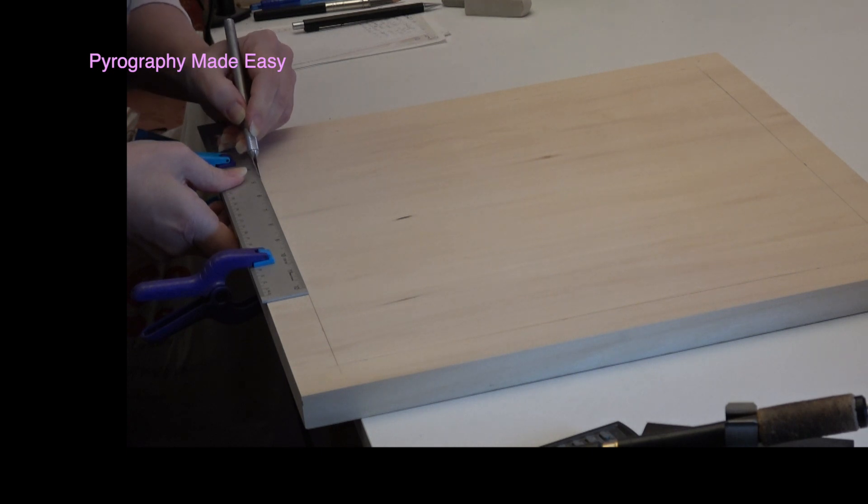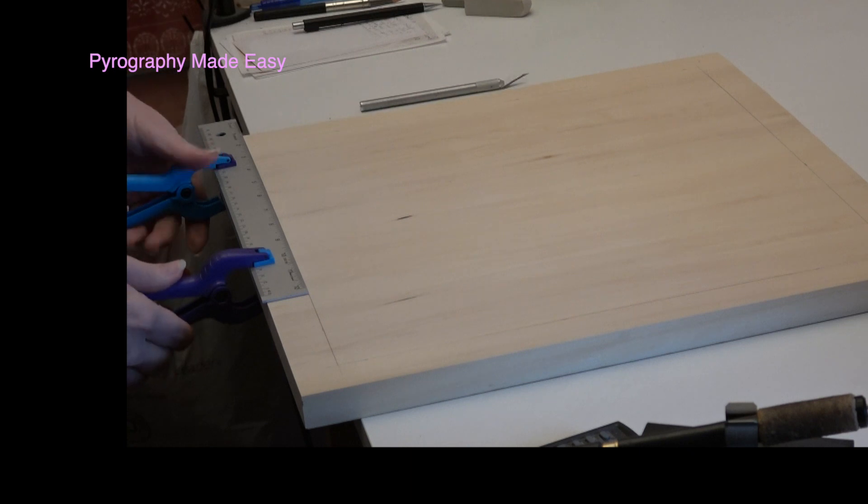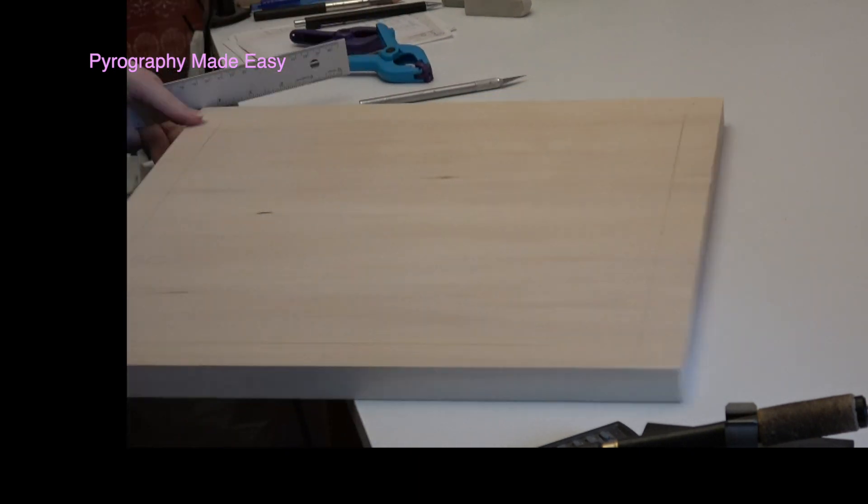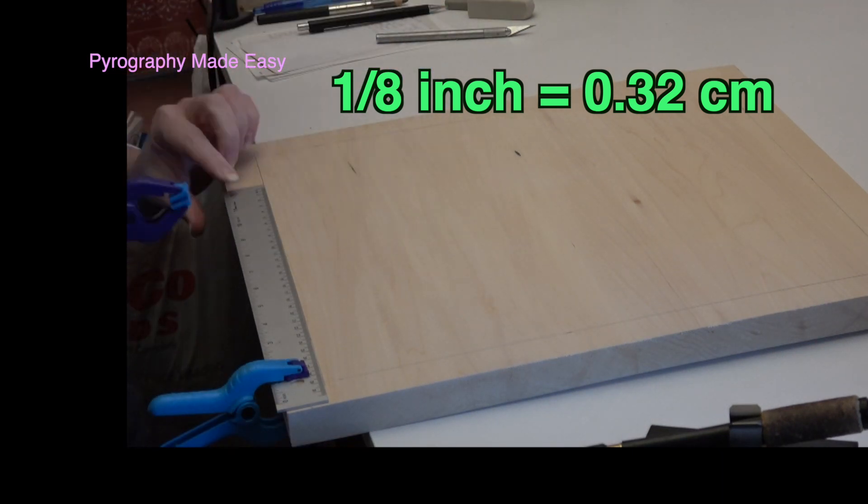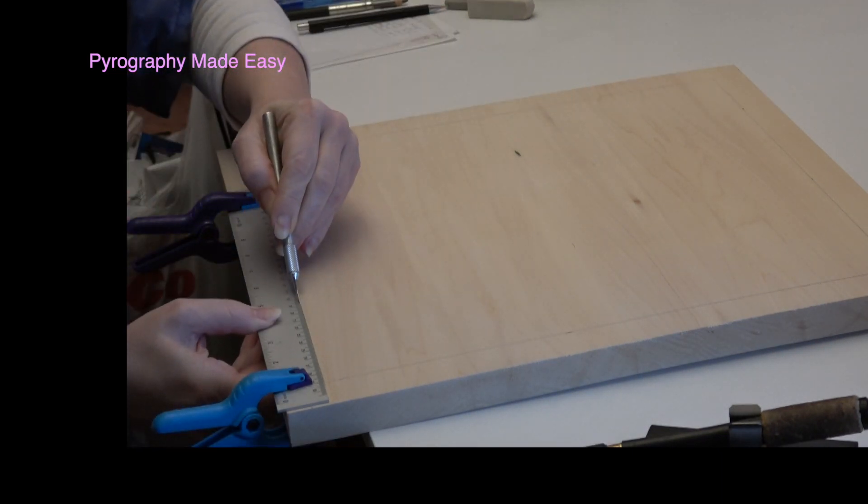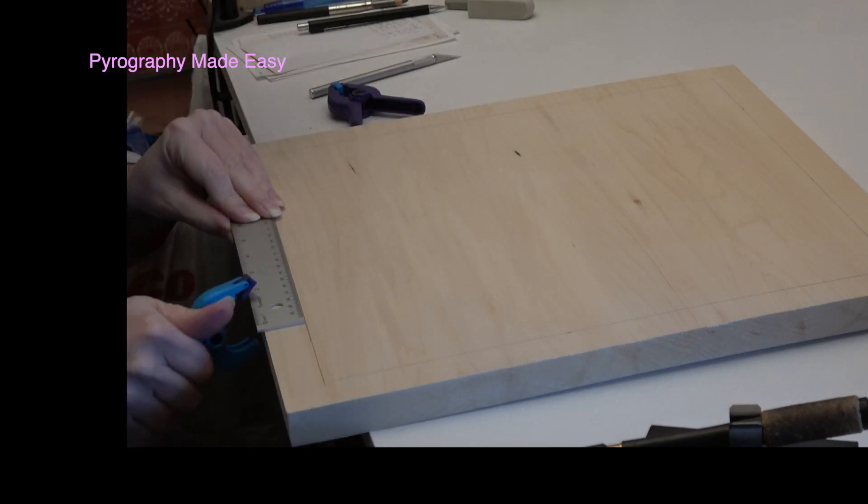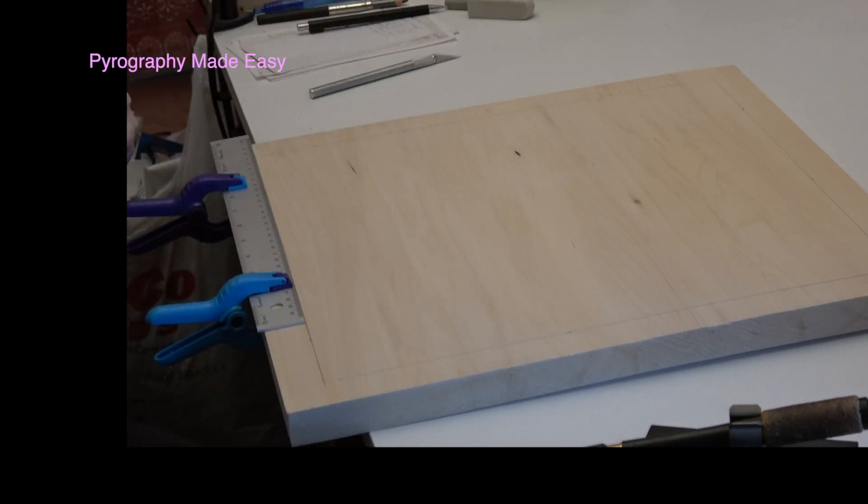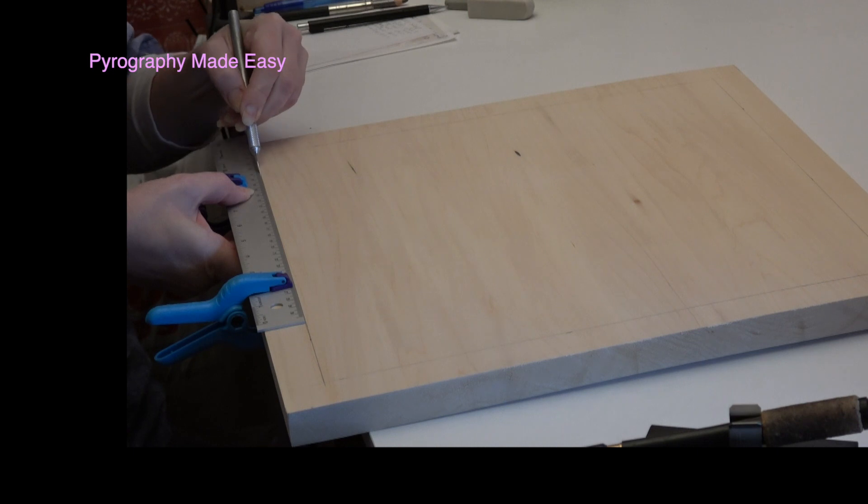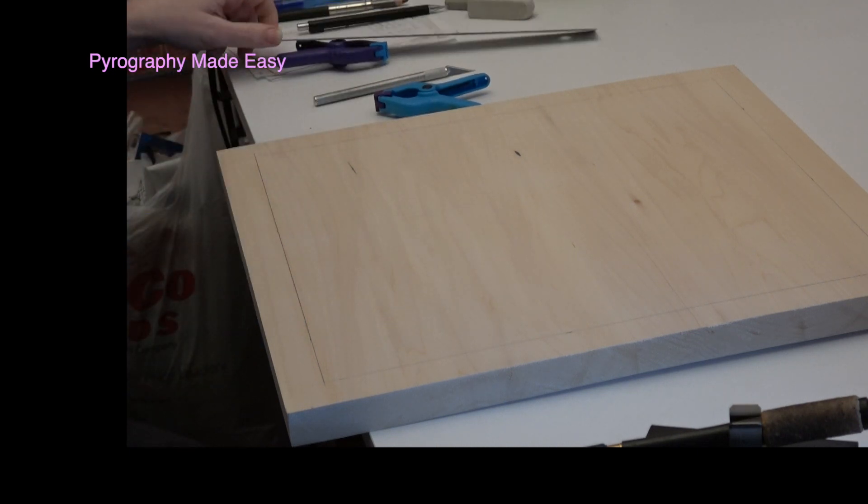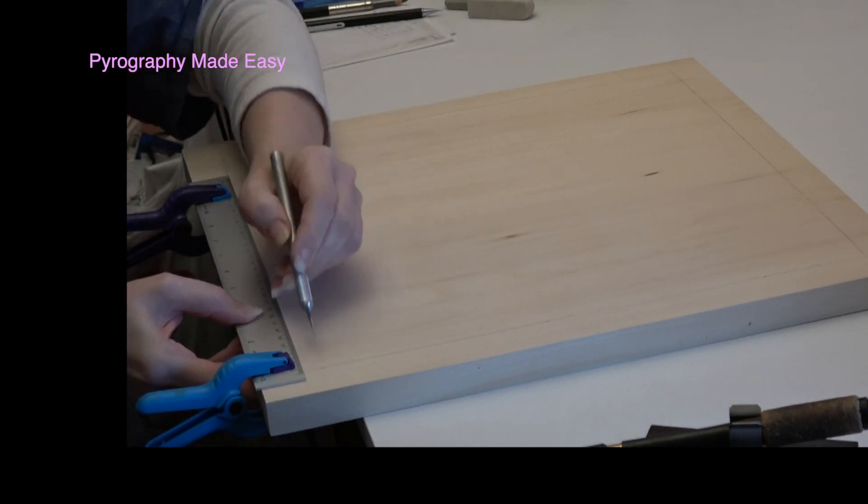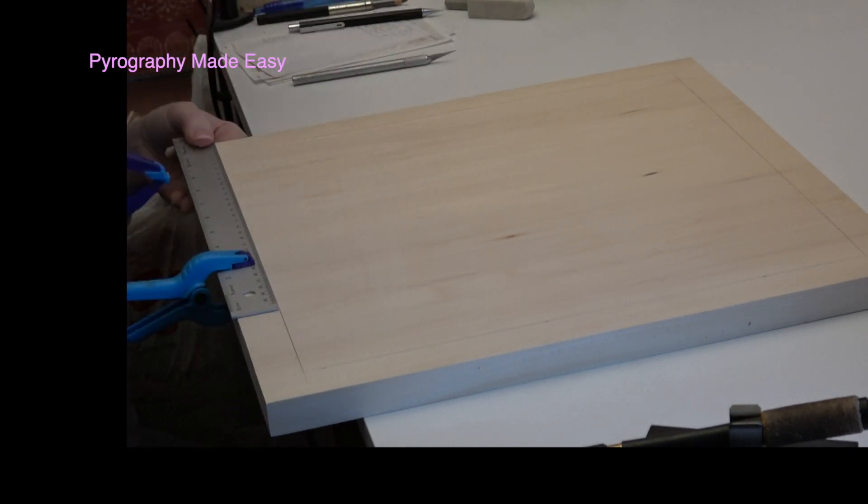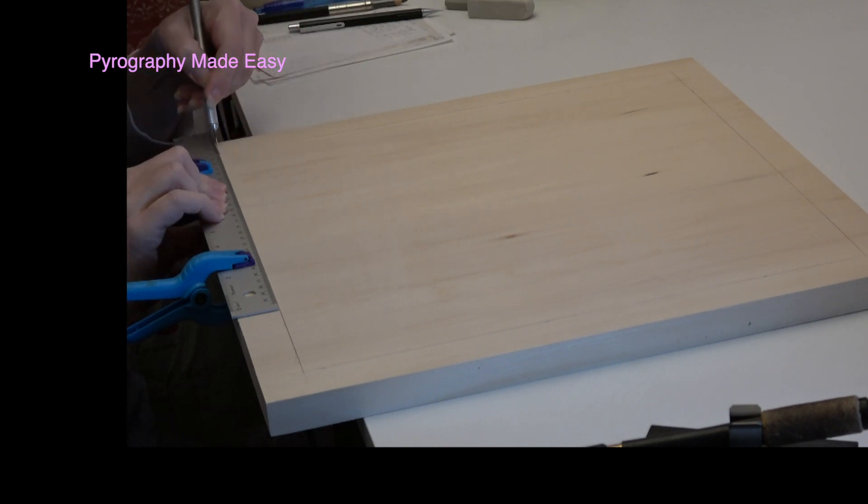Then I insert the tip of the blade into the end of the scored line and finish the cut. Score the remaining lines on the board. My cuts are about one eighth of an inch deep. Cutting with the grain line is much easier than cutting across it. Be careful not to sink the blade deeply into the wood surface when cutting with the grain. When cutting across the grain, make several passes with the knife versus trying to do one cut.